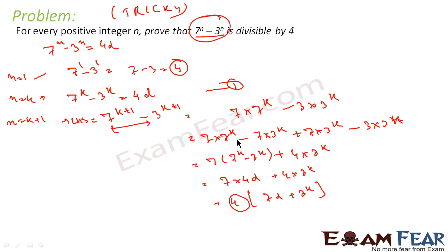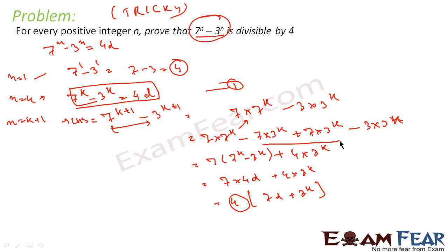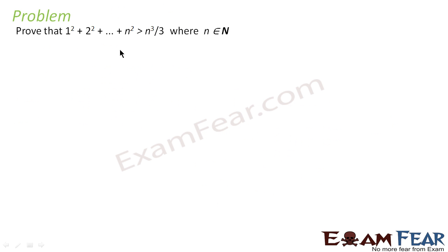Here we applied some logic. We had 7 times 7^k minus 3^(k+1) and needed to convert it into the form 7^k minus 3^k, because we know the value of that. So we subtracted and added the same value to convert it into the required form and got the answer.